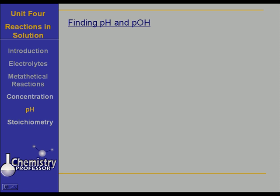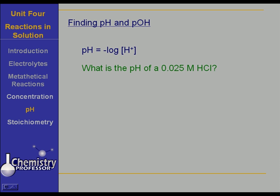Now let's talk about finding the pH and the pOH from these solutions. pH, by definition, is the negative log of the concentration of the hydrogen ion. That little p means "negative log of," and then H means hydrogen ion. So what's the pH of a 0.025 molar hydrochloric acid solution? The pH is the negative log of the concentration of the hydrogen ion, so it's the negative log of 0.025 molar.